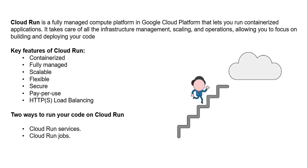There are two ways to run your code on Cloud Run. Your code can either run as a continuous service or as a job, depending on your application's needs. The first one is Cloud Run Service — it is used to run code responding to web requests. If you have web applications, Cloud Run Service is a perfect choice.